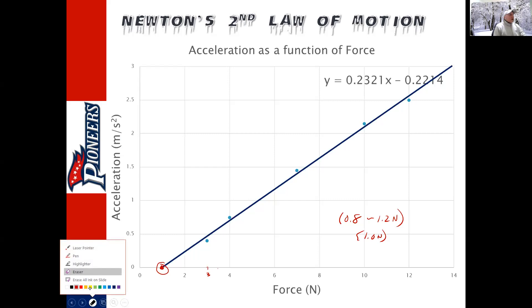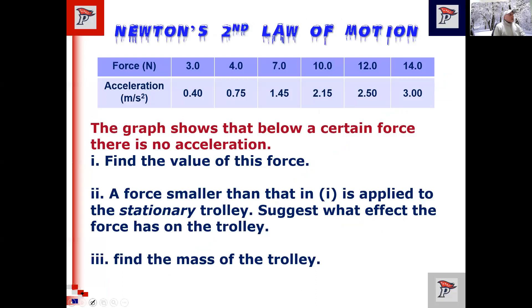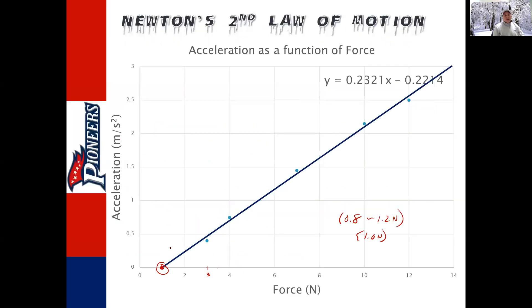Understanding that when is there no acceleration? Find the value of this force. Now, a force smaller than that is applied to the trolley, stationary trolley. So it's not moving. But we start applying a force smaller than that. Suggest what effect this force has on the trolley. So those two questions are really good conceptual questions. So it means we're applying a force anywhere in this area. Less than this amount. It's not moving. What's going to happen? What would happen?